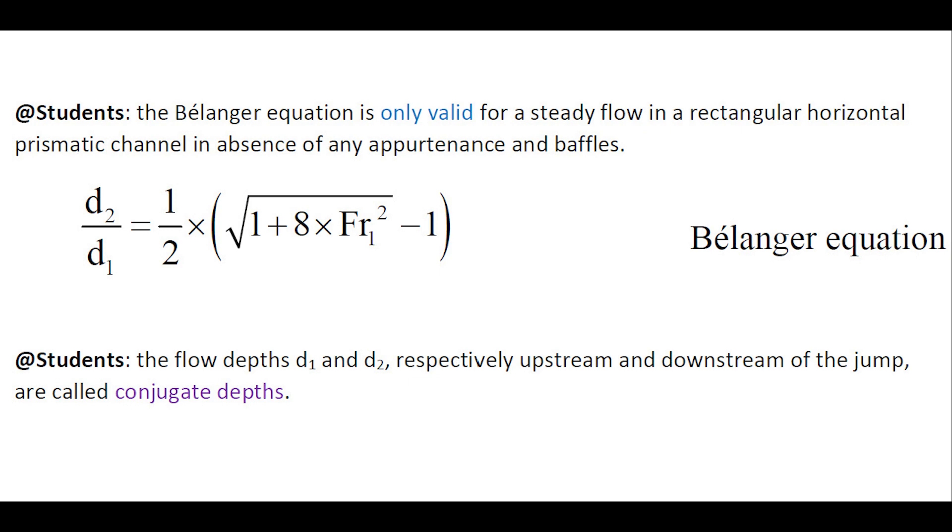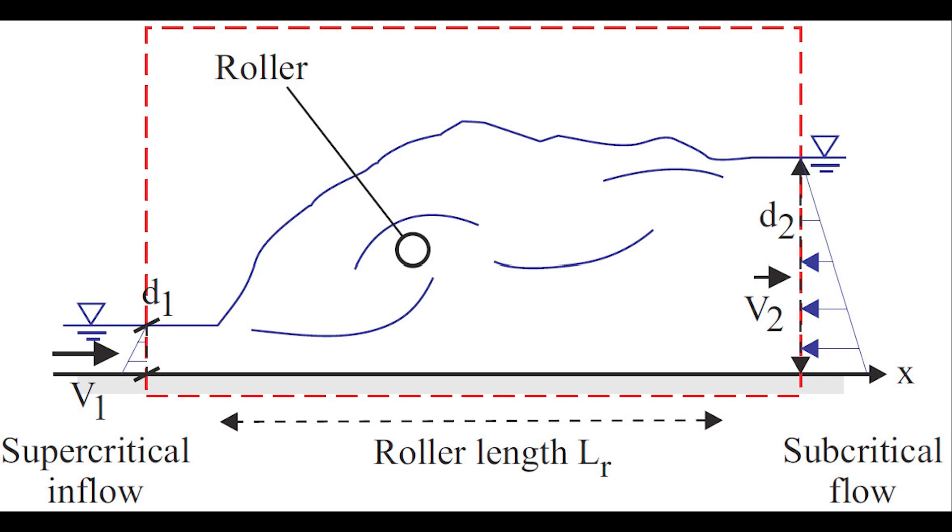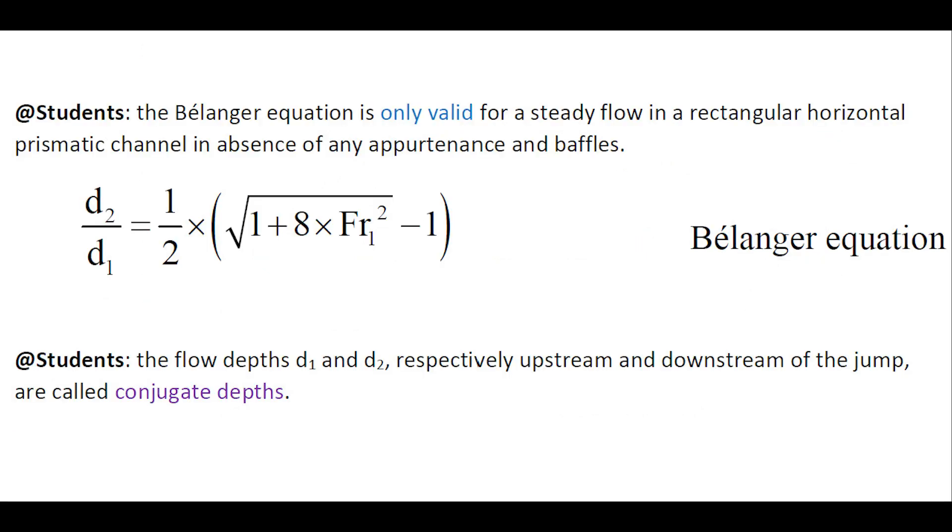Also students, the flow depths d1 and d2, respectively the upstream and downstream depths of the jump, are called conjugate depths.